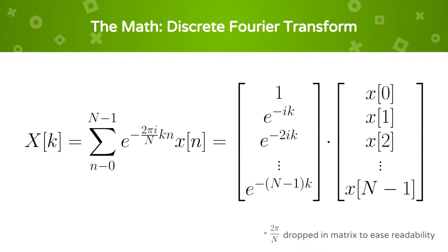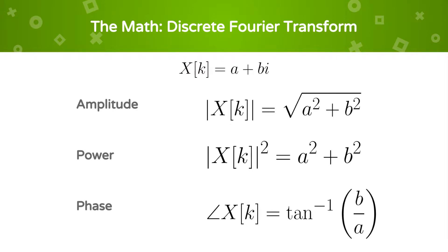For a signal in the time domain sampled at time step n equals 0 to n equals N minus 1, the discrete Fourier Transform shows how much of a signal there is at each frequency k. X at k is represented as a complex number. The magnitude is the amplitude of frequency k, the square of the magnitude is the power of frequency k, and the angle is the phase of the frequency k.